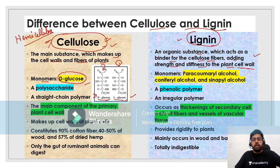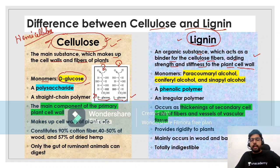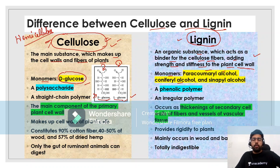What about the monomers of lignin? There are several monomers: paracoumaryl alcohol, coniferyl alcohol, and sinapyl alcohol. All of these combine to form lignin.